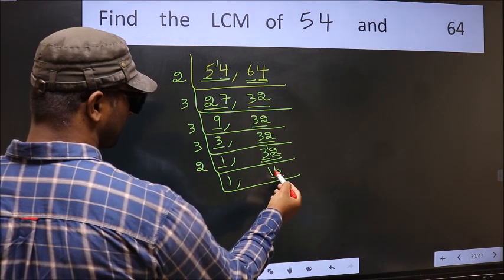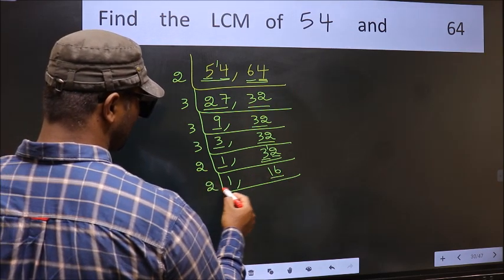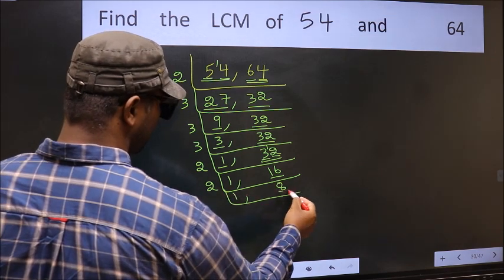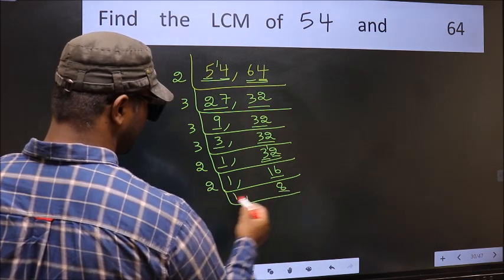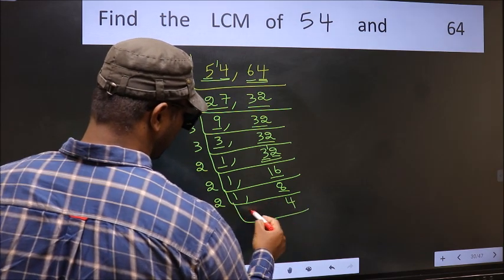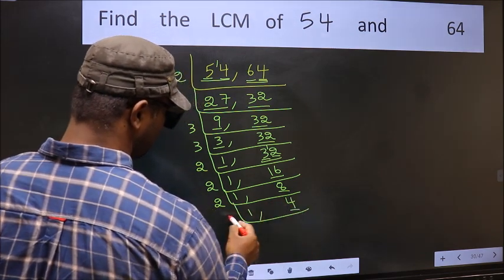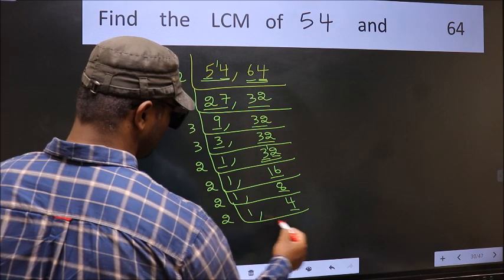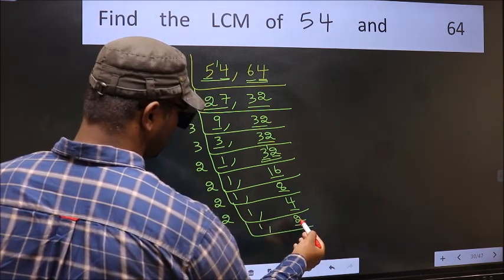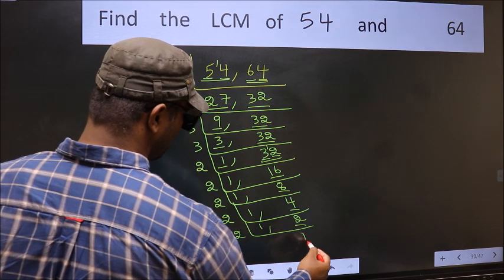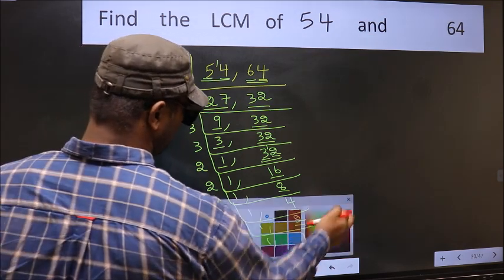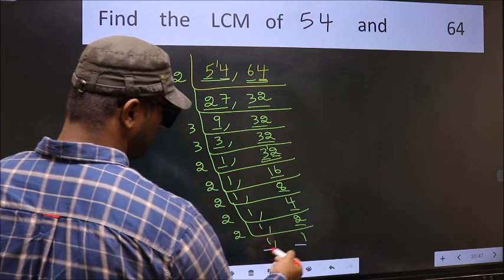Now we have 16. 16 is 2 eights = 16, so divide by 2. Now we have 8. 8 is 2 fours = 8. Now we have 4. 4 is 2 twos = 4. Now we have 2. 2 is a prime number, so 2 ones = 2. Now we have 1 on both sides.